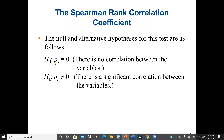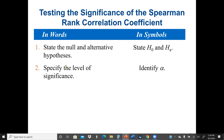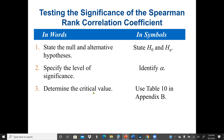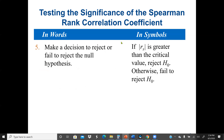The steps for testing the significance of the Spearman rank correlation coefficient are: first, state the null and alternative hypotheses H-0 and H-A; second, specify the level of significance alpha; third, determine the critical value using Table 10, a special table for the Spearman rank correlation coefficient critical value; fourth, find the test statistic; then make a decision to either reject or fail to reject H-0.